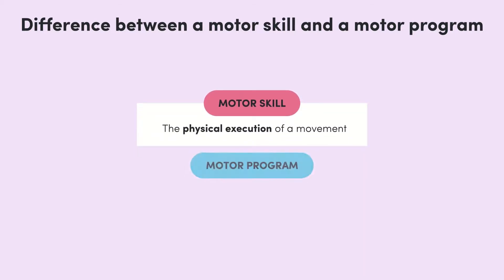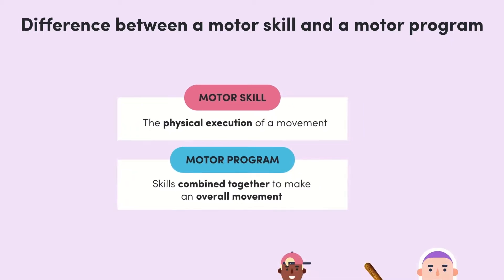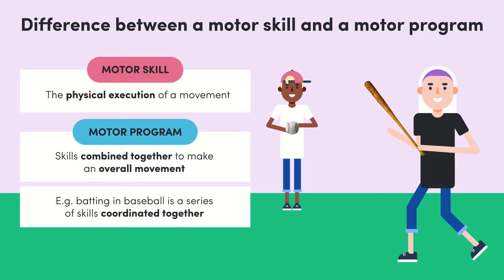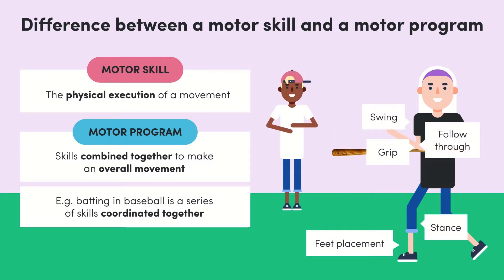Then there's motor programs. A motor program is a combination of skills combined together to make an overall movement. For example, batting in baseball is a motor program. It involves a series of skills coordinated together such as grip, stance, feet placement, swing, and follow through — and all together we have a skill.